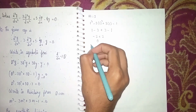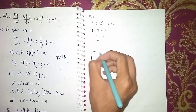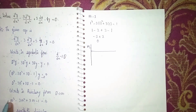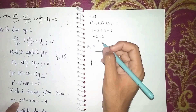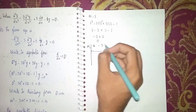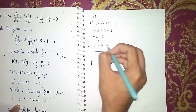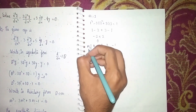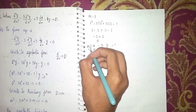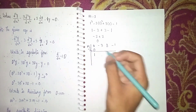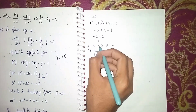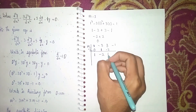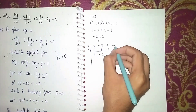In synthetic division, make a row-and-column table. Write m = 1, and then write the coefficients: 1, minus 3, plus 3, minus 1. Bringing down 1, multiply 1 by 1 to get 1; minus 3 plus 1 is minus 2; multiply 1 by minus 2 is minus 2; 3 minus 2 is 1; then 1 times 1 is 1; and 1 minus 1 is 0.